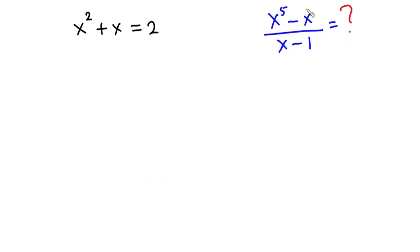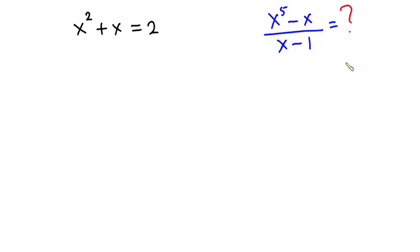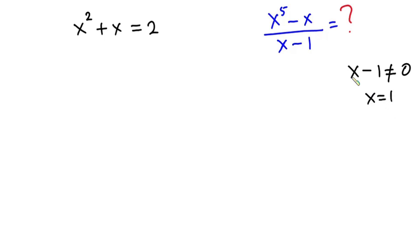Now let's get started. Considering this fraction that we are looking for, one important thing you should note is that x minus 1, which is the denominator, should never be equal to 0. Because if x minus 1 equals 0, then x equals 1, and that would make the denominator 0, which we don't want.